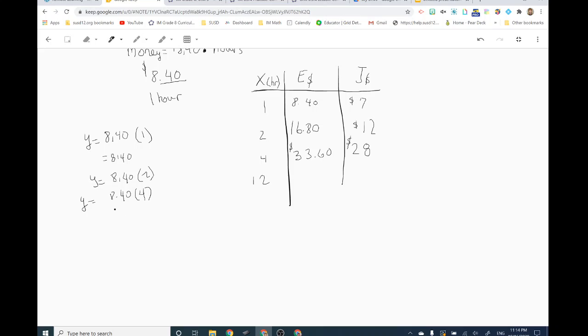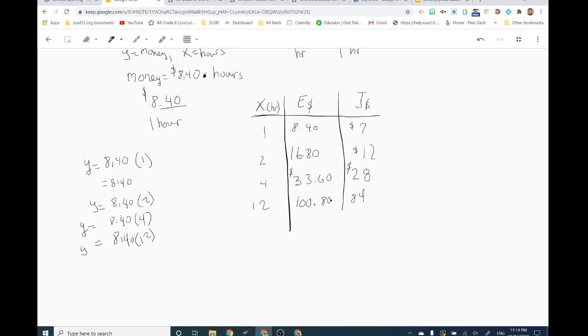Now for 12 hours, $8.40 times 12 hours, how much is Elena making? Don't even think about having me do that one in my head. She makes $100.80. And Jada makes 12 times seven is $84. That one I can do in my head. Do you want to double check me? I mean, I'm no genius. Double check me if you want to.